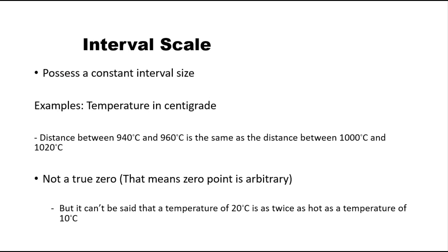The next one is interval scale. Interval scale possesses a constant interval size and does not have a true zero point — that means its zero point is arbitrary. For example, consider temperature in centigrade: the distance between 940 and 960 degrees centigrade is the same as the distance between 1000 and 1020 degrees centigrade — the difference is 20 degrees centigrade. So in interval scale, we can compute the difference between two data points. This is the advantage of interval scale over ordinal scale.